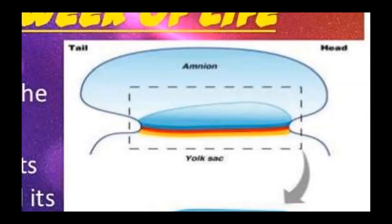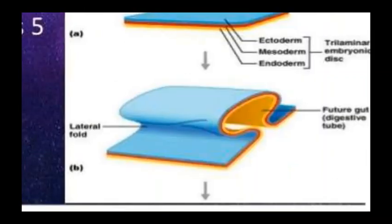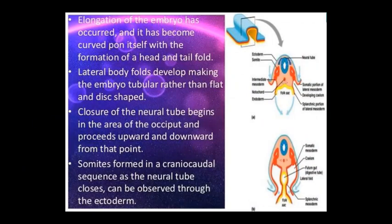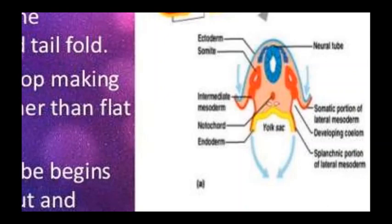The embryo at this stage shows amnion from head to tail, along with the yolk sac, from which the trilaminar embryonic disc forms. Lateral folds are visible, and the future gut — which will become the digestive tube — is forming. The neural tube is visible alongside the ectoderm and somites as paired bodies on both sides. Also visible are intermediate mesoderm, notochord, endoderm, yolk sac, the somatic portion of lateral mesoderm, developing coelom, and splanchnic portion of lateral mesoderm.